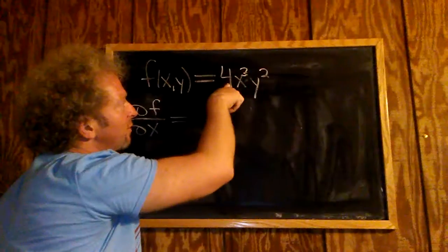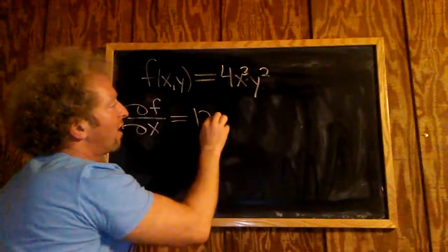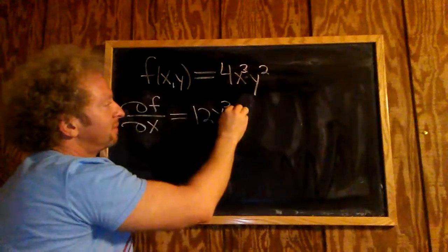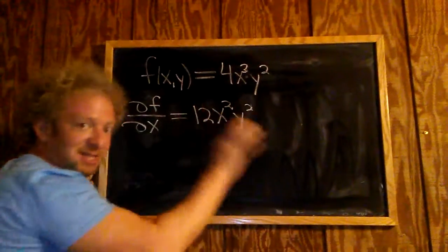Just use the power rule here. 3 times 4 is 12. So you get 12x squared, and then here you just have y squared. That's it.